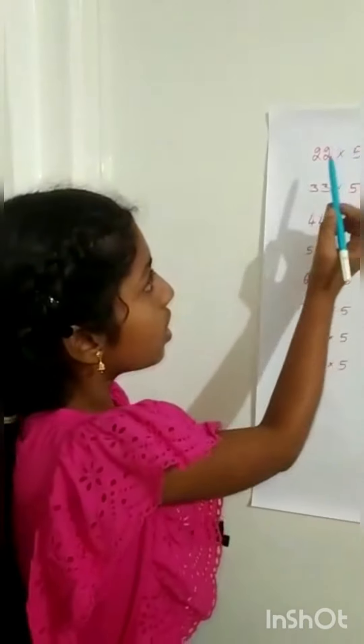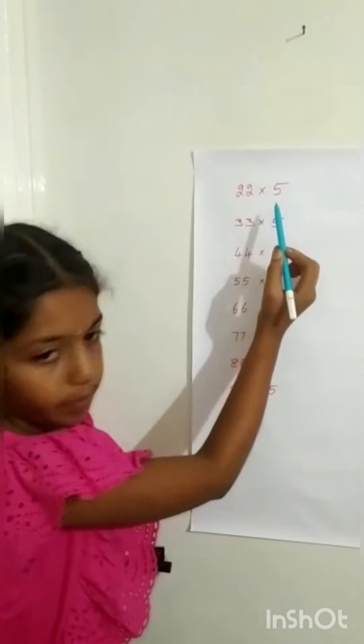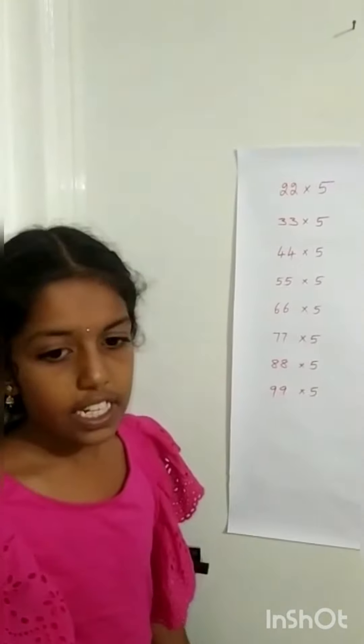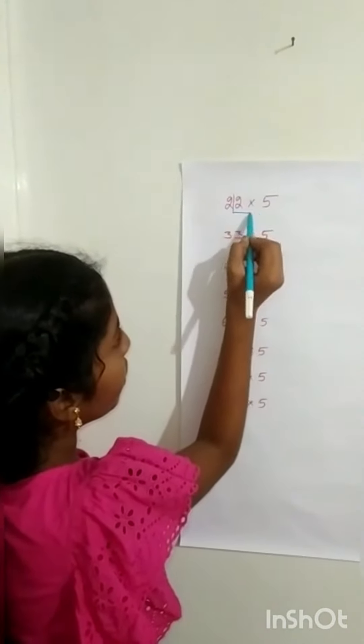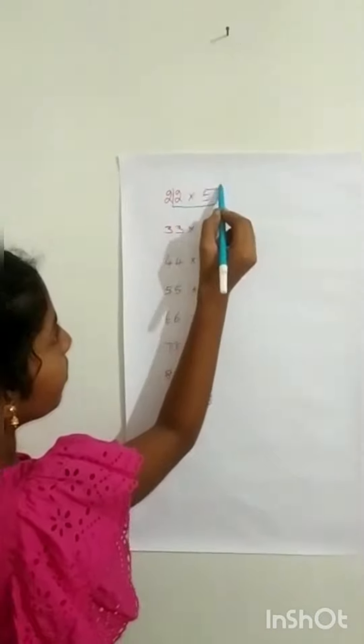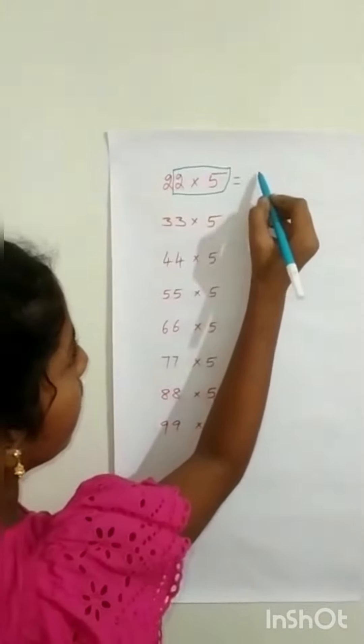How to find the answer for 22 into 5? It is very simple. First we multiply 2 into 5, which is equal to 10.